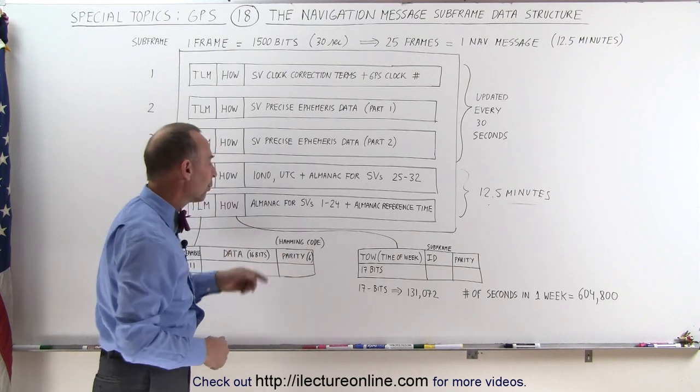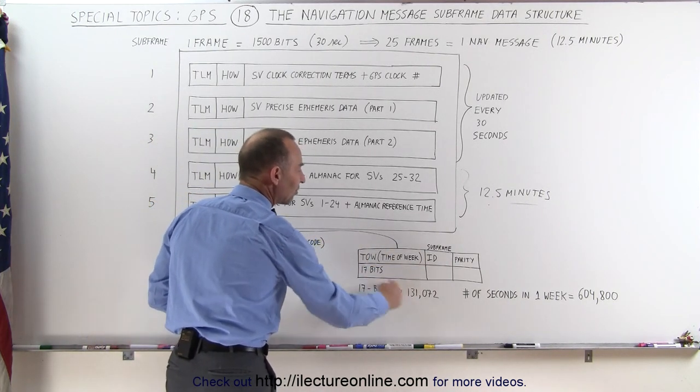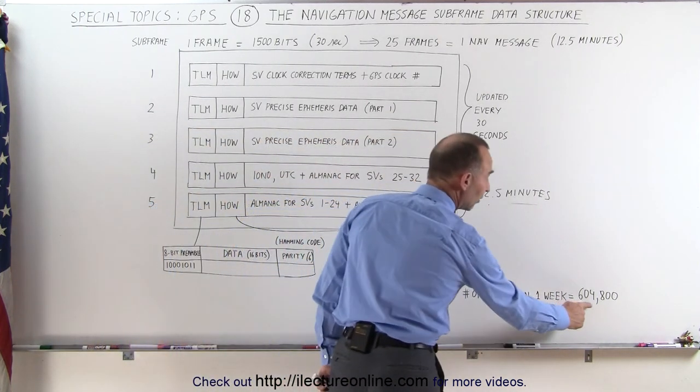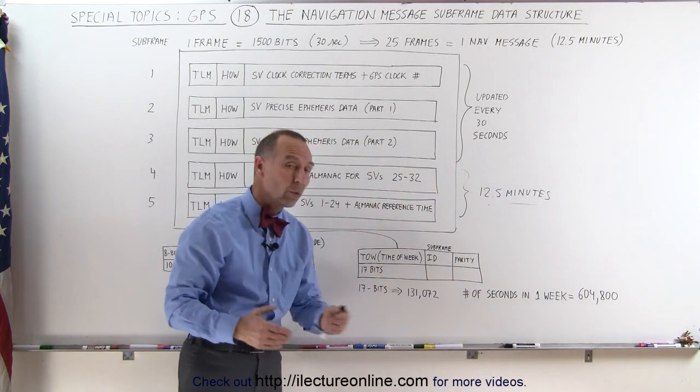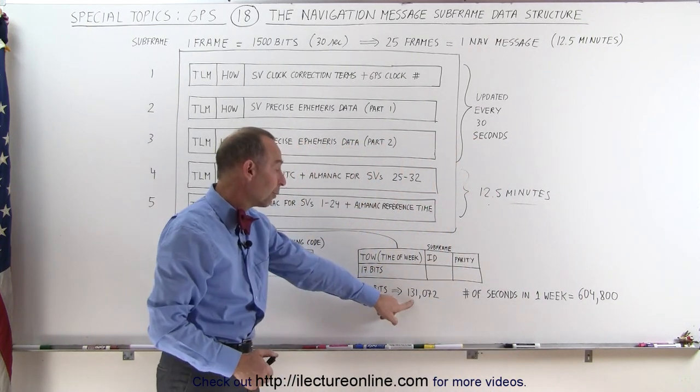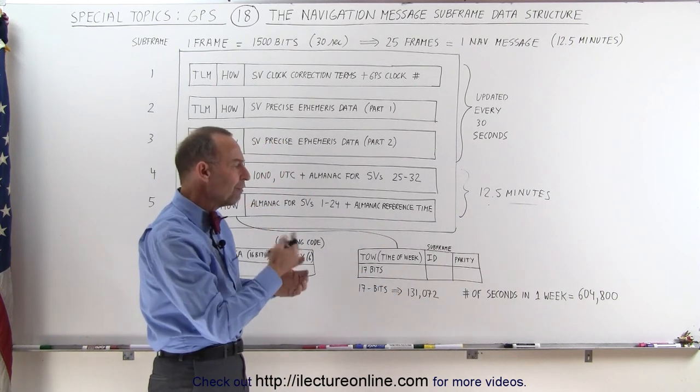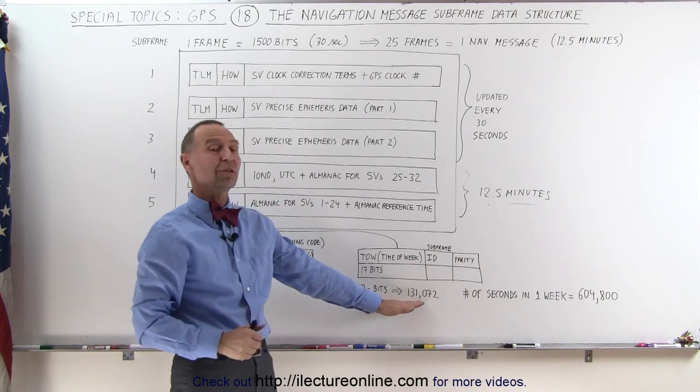On the second word, the handover word, it contains 17 bits that will then express the time of the week. Notice in a single week, there are 604,800 seconds, however, the 17 bits only leave room for 131,072 entries. So how do you fit 604,800 seconds into a 17-bit structure?